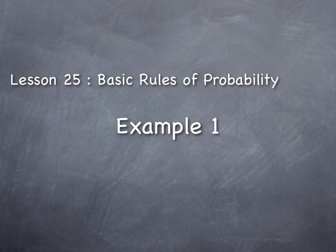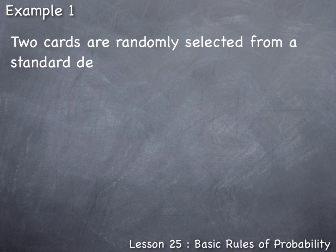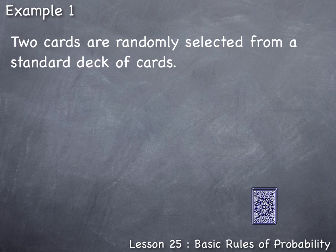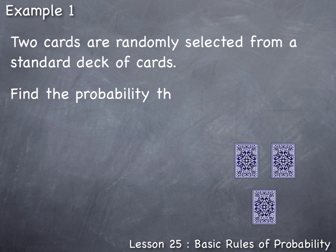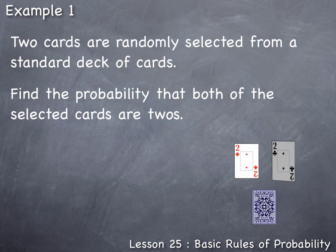Lesson 25: Basic Rules of Probability. Example 1 — two cards are randomly selected from a standard deck of cards. Find the probability that both of the selected cards are twos.